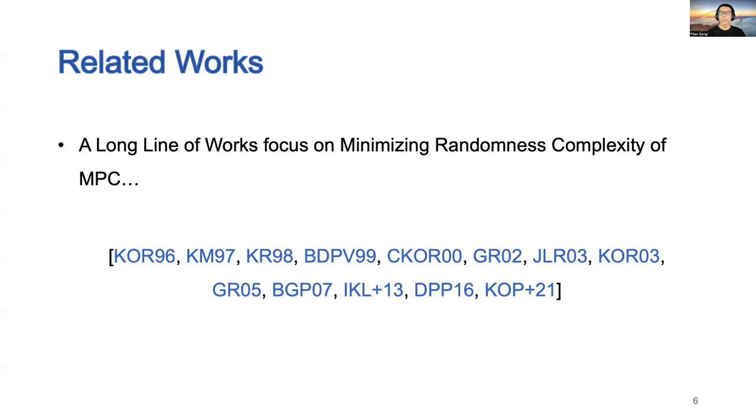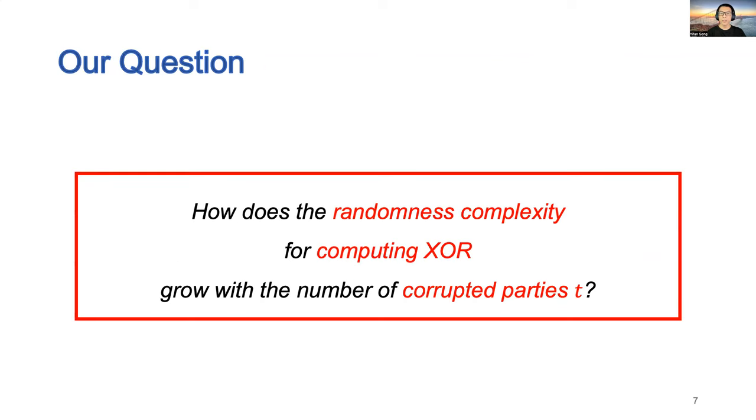The problem of randomness complexity of MPC has been studied by a fairly large body of works, which cover the directions of both lower bound and upper bound. Almost all of these works consider the same simple model as we do. Our research question is to understand how the randomness complexity for computing XOR grows with the number of corrupted parties.